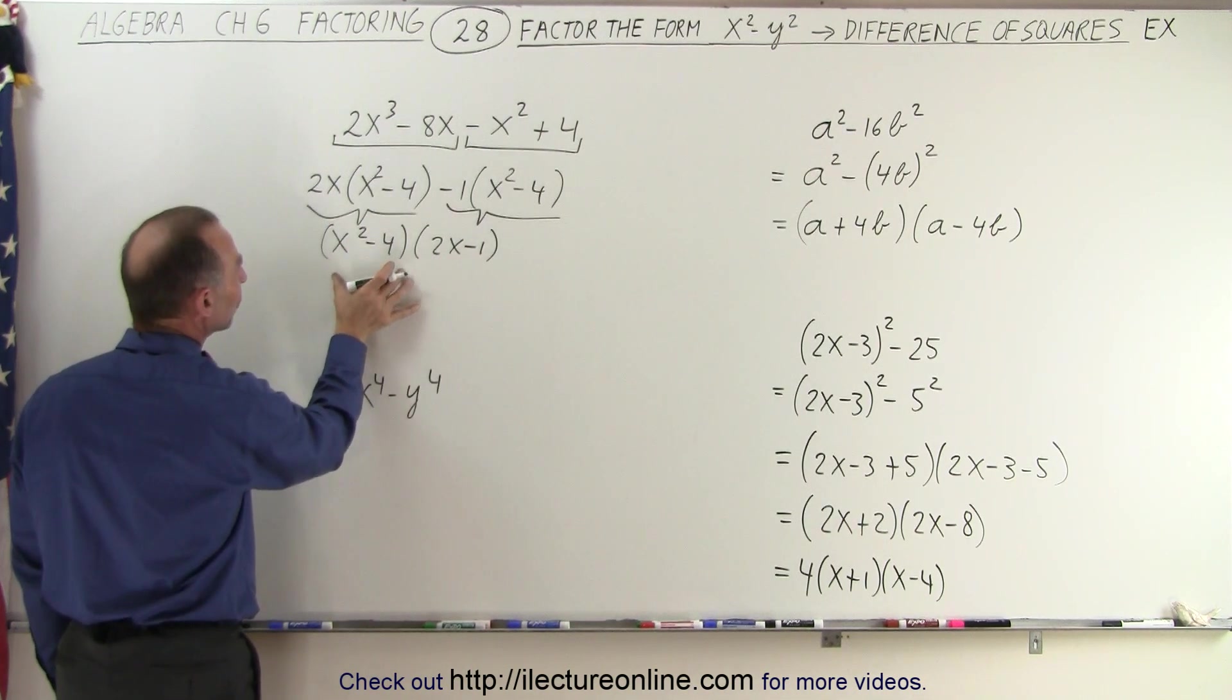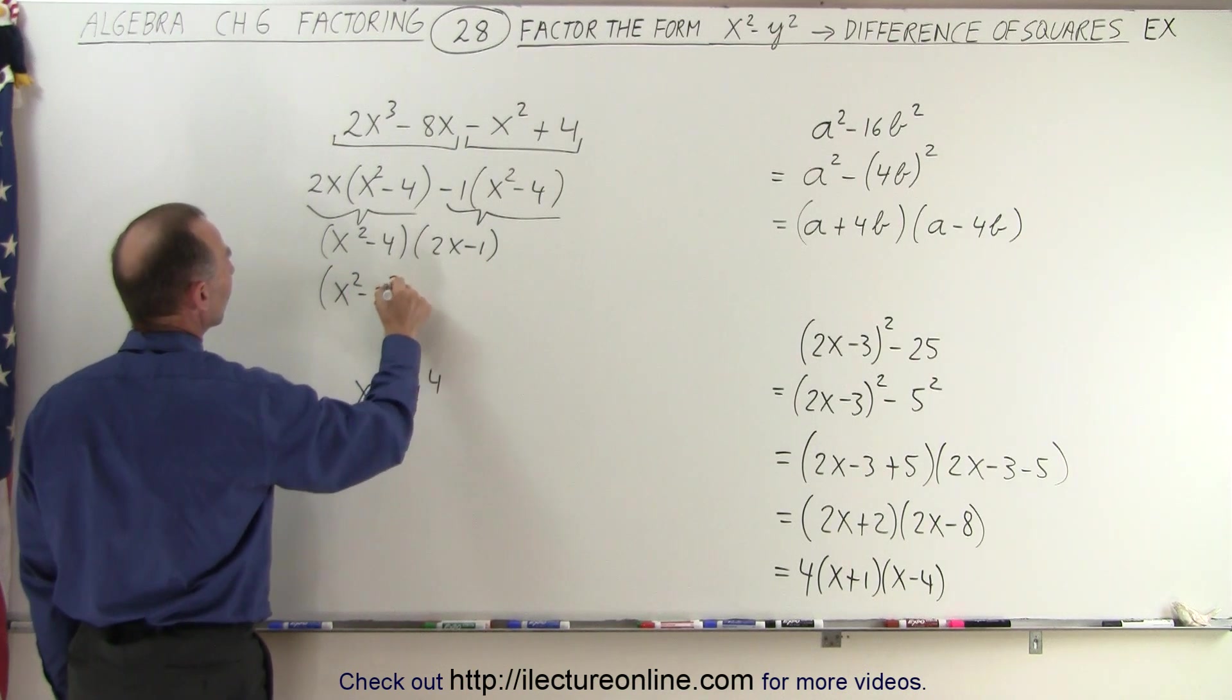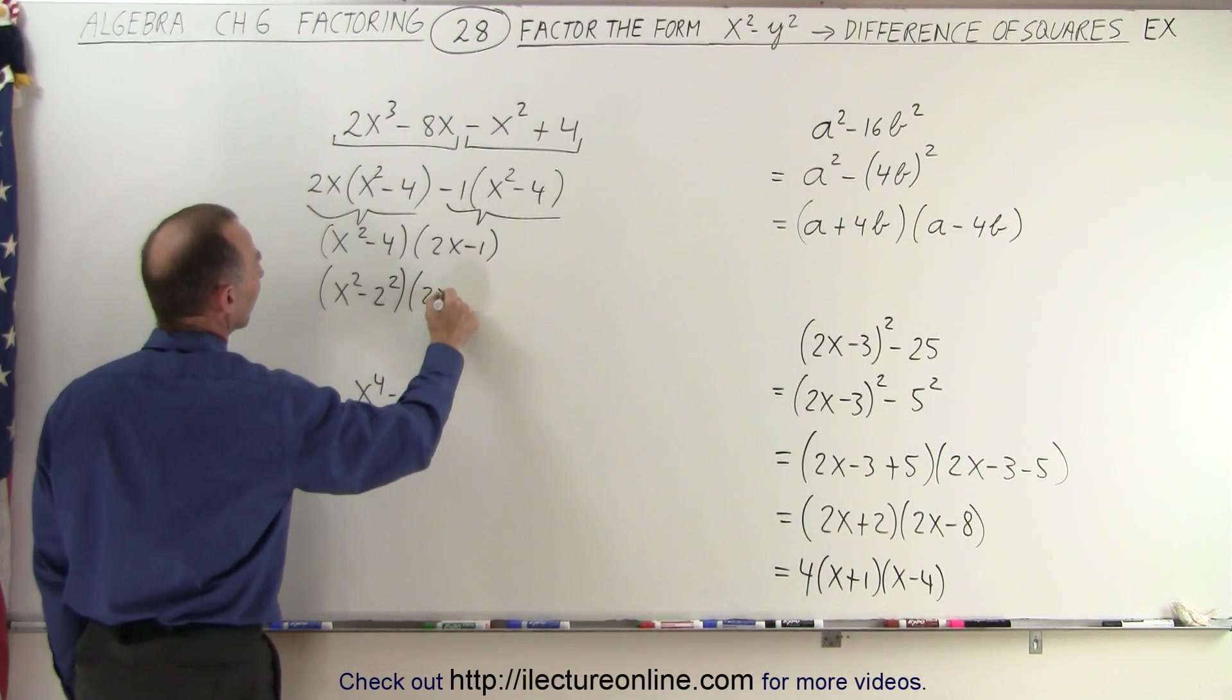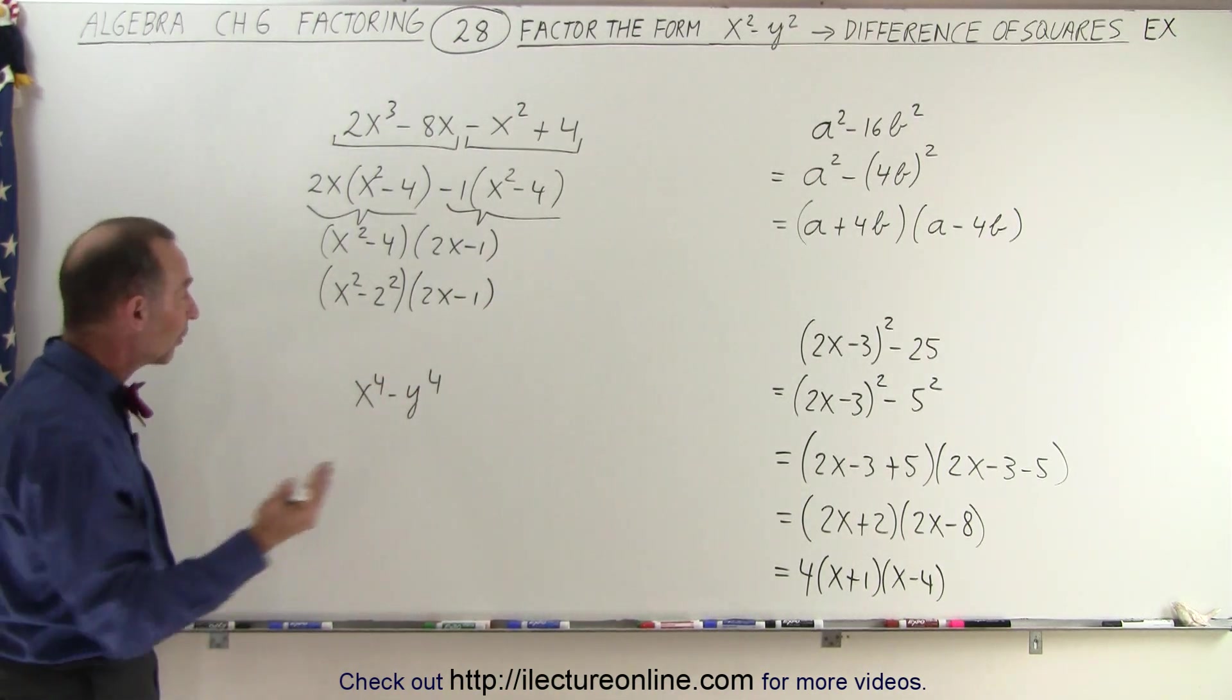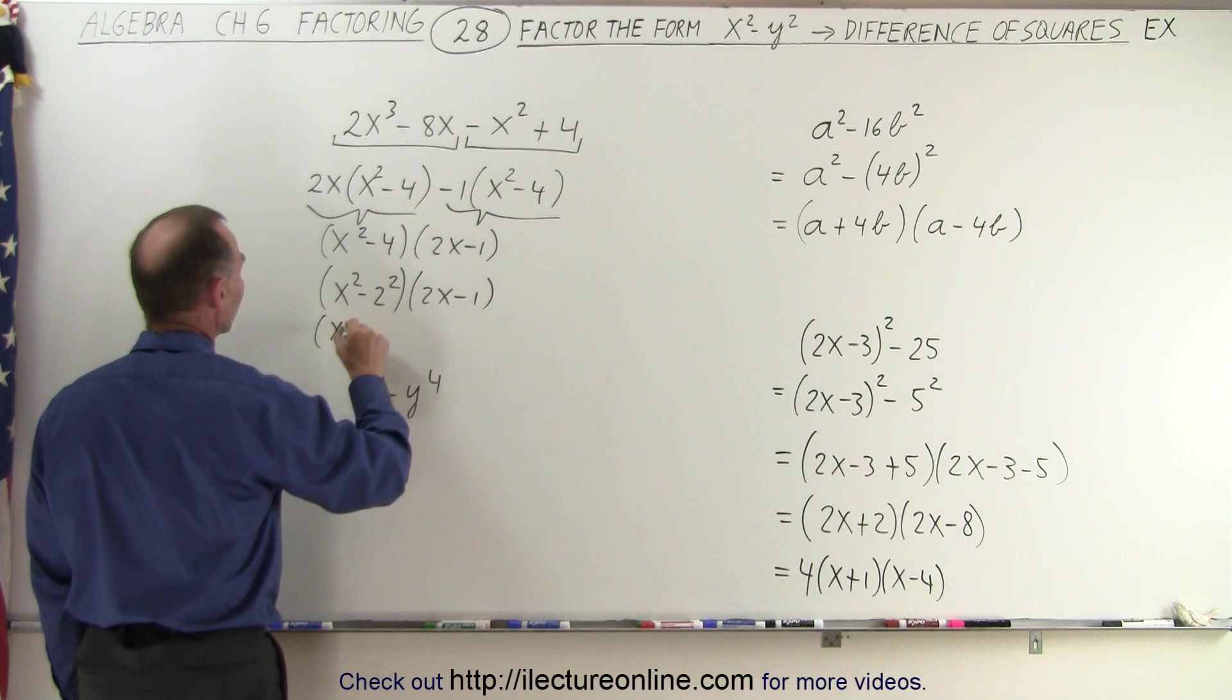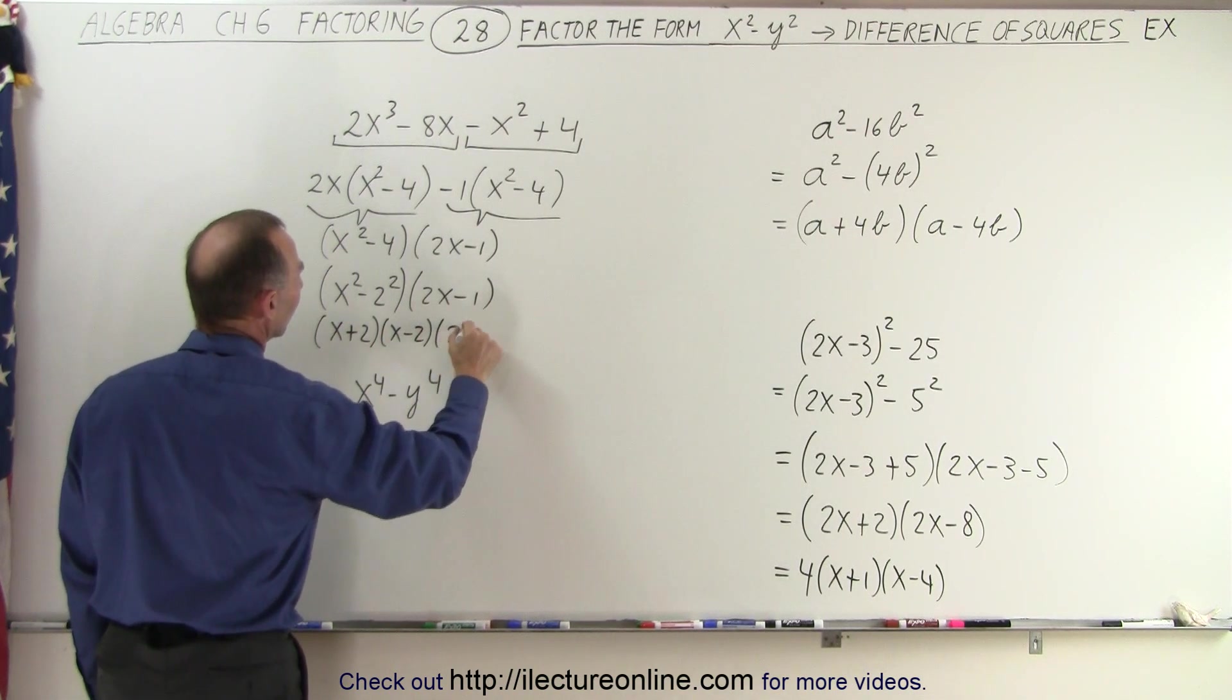Now you can look at this and say I can rewrite this as follows. This can be written as x² minus 2² and then 2x minus 1. And finally, this again is the difference of two squares, so this can be written as x plus 2 times x minus 2 times...